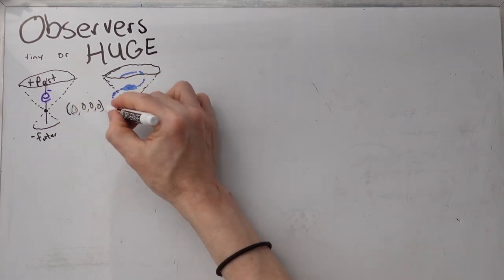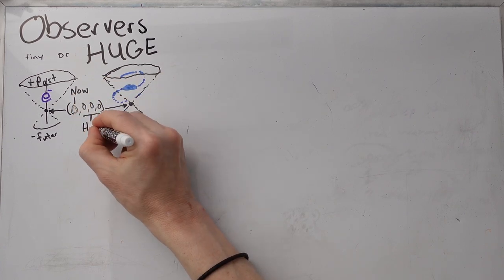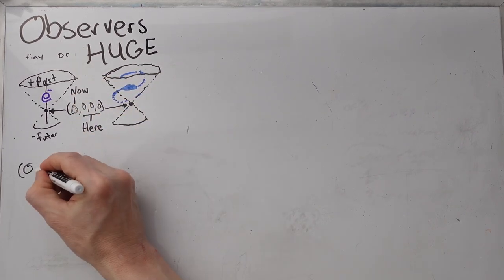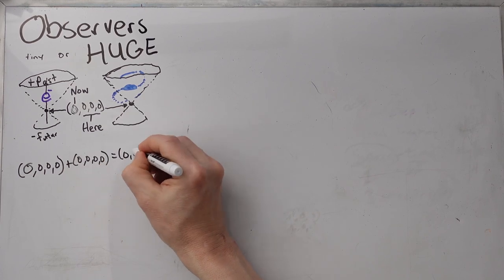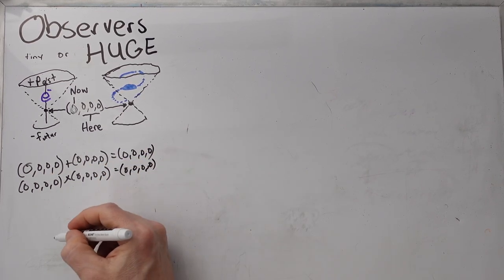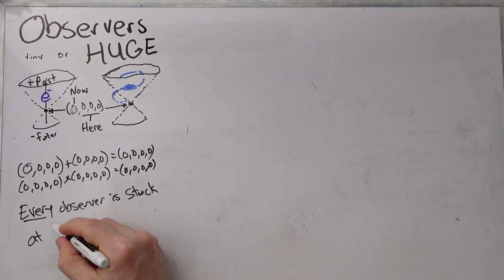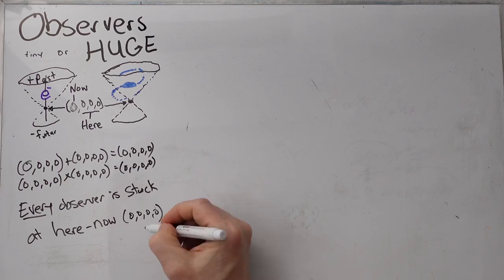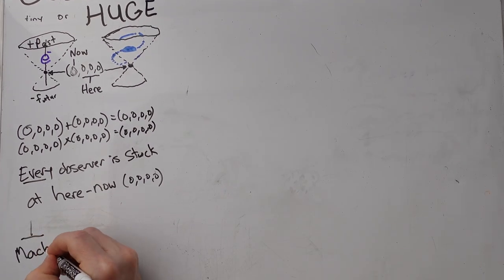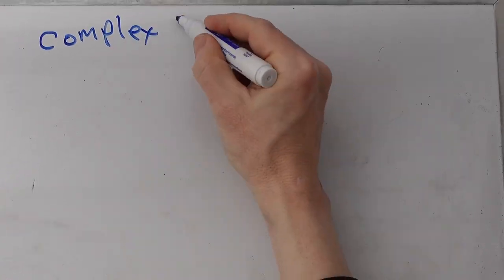Now both of these have a here now. Now being the first number, here being the other three. And we know the math. Zero plus zero equals zero. Zero times zero is zero. And that means that every observer is stuck at here now. And I call this my inverse Mach principle. I think observers are the key.